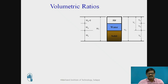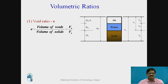With this basic understanding, we can derive many properties of the soil. One property we can define from the three-phase system is called the void ratio, which is generally represented by the symbol e. Void ratio is the ratio of volume of voids to volume of soil solid, and mathematically it is written as Vv upon Vs.